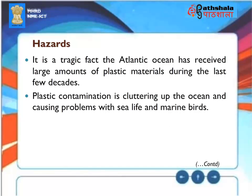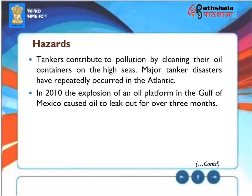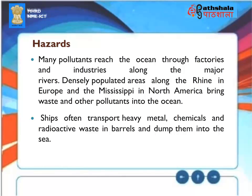Hazards: The Atlantic Ocean has received large amounts of plastic materials during the last few decades. Plastic contamination clutters the ocean, causing problems with sea life and marine birds. Tankers contribute to pollution by cleaning their oil containers on the high seas, and major tanker disasters have repeatedly occurred in the Atlantic. In 2010, the explosion of an oil platform in the Gulf of Mexico caused oil to leak for over three months. Pollutants reach the ocean through factories and industries along major rivers such as the Rhine in Europe and the Mississippi in North America. Ships often transport heavy metals, chemicals, and radioactive waste in barrels and dump them into the sea.